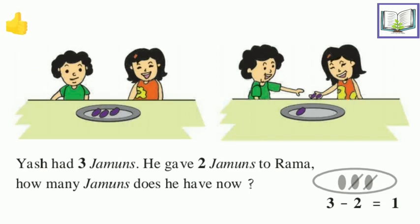He gave two jamuns to Rama, can you find out Rama? She is there. Now Yash had three jamuns, he gave two jamuns to Rama, so how many jamuns does he have? Can you see in the first picture the plate carries three jamuns.